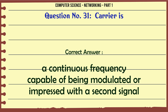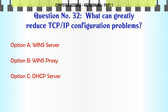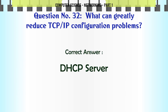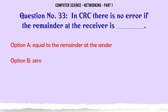What can greatly reduce TCP/IP configuration problems? A. WINS Server. B. WINS Proxy. C. DHCP Server. D. PDC. The correct answer is: DHCP Server.